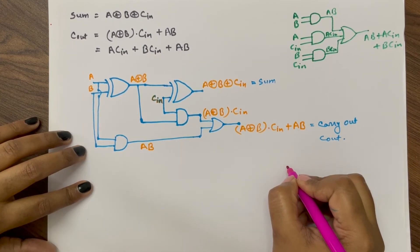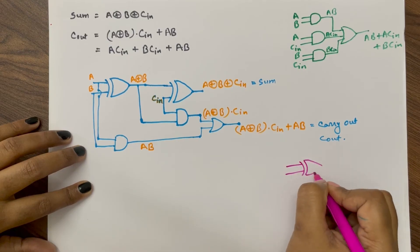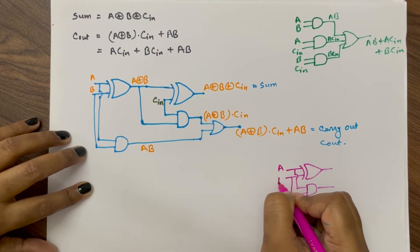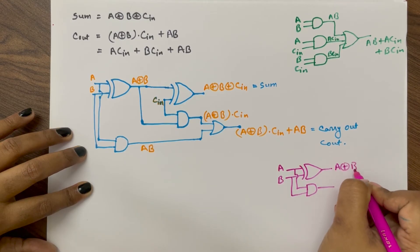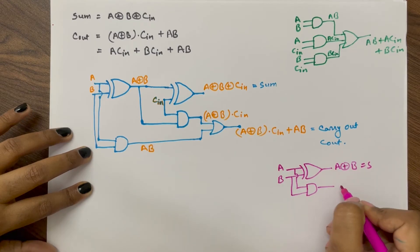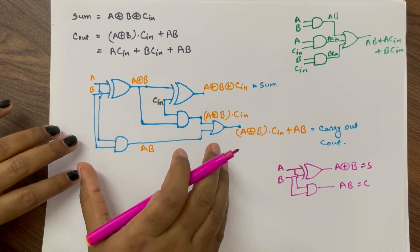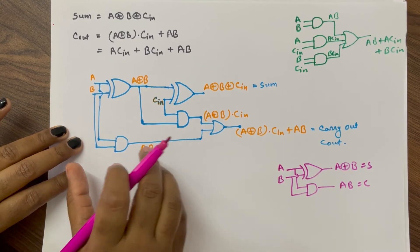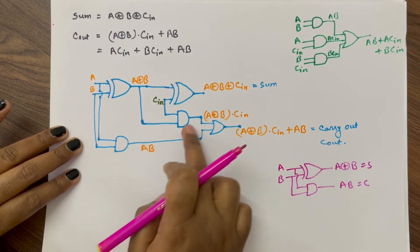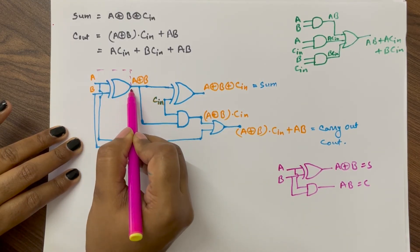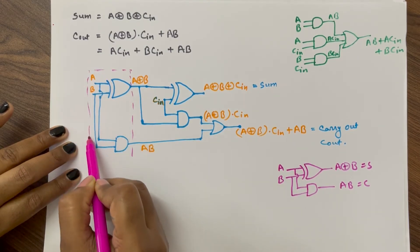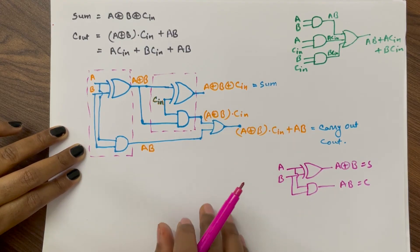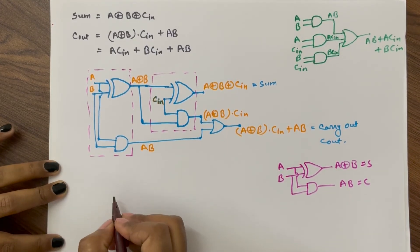Coming back to the first circuit, we know that a half adder is a combination of an XOR gate and an AND gate. If inputs are A and B, the half adder output is A XOR B for sum and A·B for carry. Looking closely at the full adder circuit, you will find it is a combination of two half adder circuits — one here and another here. So we can design a full adder using two half adders.